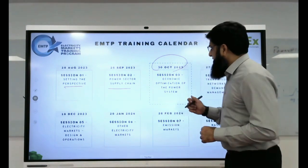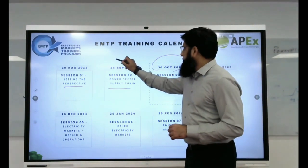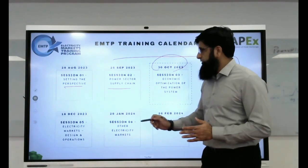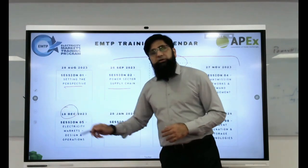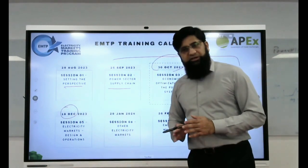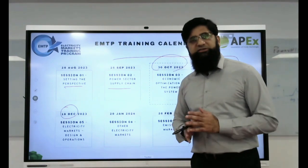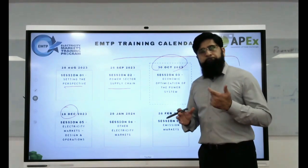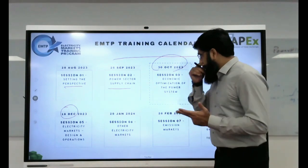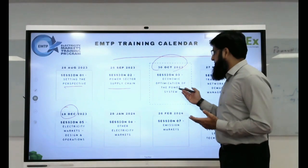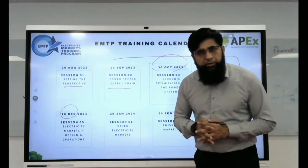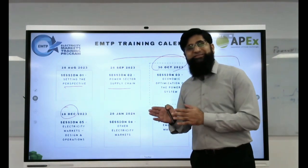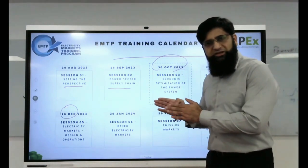Sessions 2, 3, and 4 are making a foundation for session number 5 in December, which will go into complex electricity markets. Here we are building the fundamentals, starting from load, then generation, some words about ancillary services. Today, we are going to discuss economic optimization of power systems, covering different horizons from short, medium, to long term — or from operations to new capacity addition horizons.